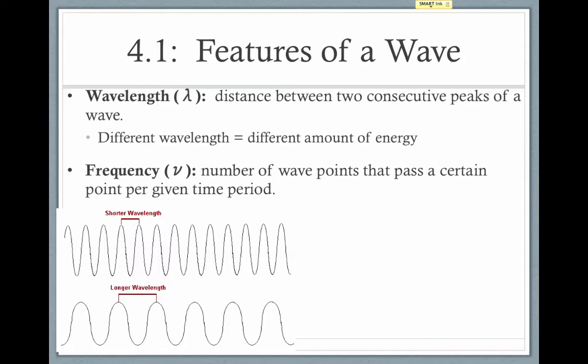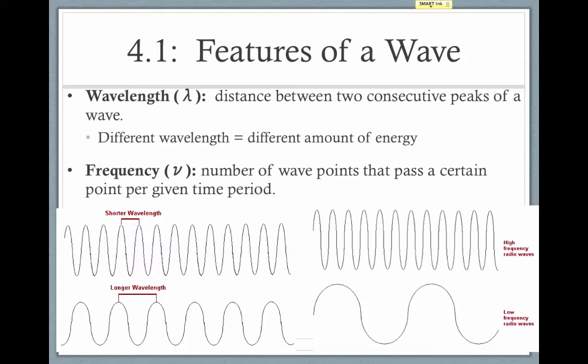We can also define the frequency of a wave. This is the number of wave points that pass a certain point per given time period, usually per second. So for instance, if I had this wave moving and I measured the number of peaks that passed, let's say, this point right here, this line, every second, the wave on the top would have more waves passing that line every second than the wave on the bottom.